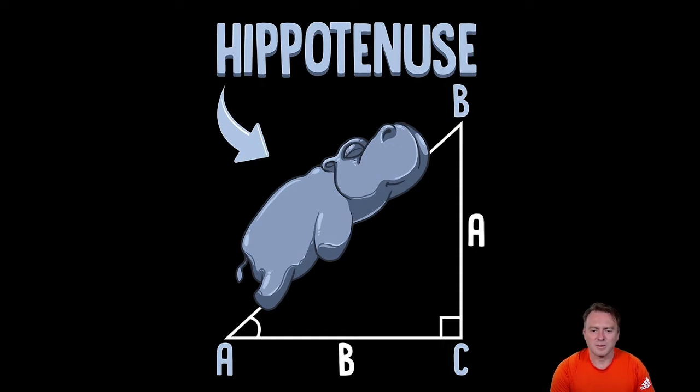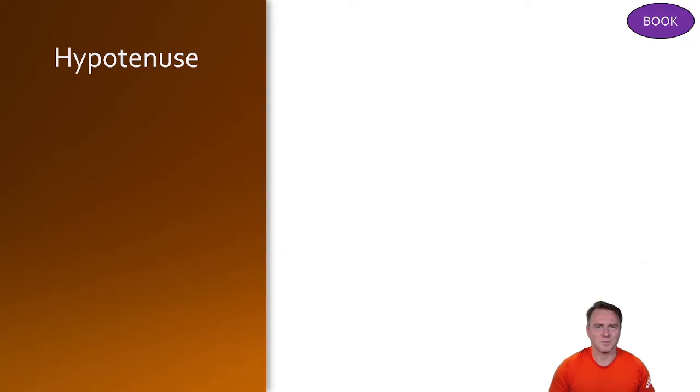So a couple ways of remembering this. Some people use the word hippopotamus. So hypotenuse sounds like a hippo. Hippos are really big so that's the bit why it's linked to the biggest side. The hypotenuse is always opposite that right angle. That's really important to learn.